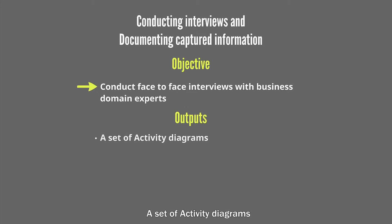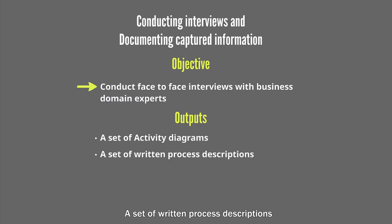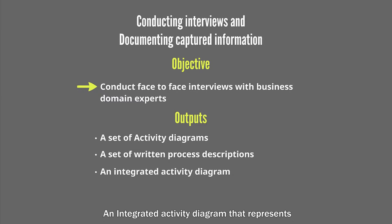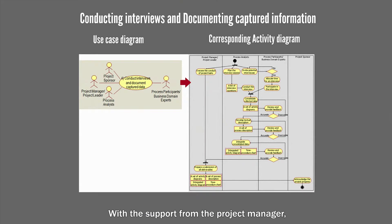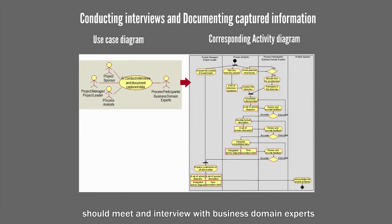There are at least four outputs that should be developed in these steps: a set of activity diagrams, a set of written process descriptions, an integrated activity diagram that represents an interconnected view of all involved business processes, and a time procedure chart. With the support from the project manager, process analysts should meet and interview with business domain experts who are knowledgeable about the target business processes.